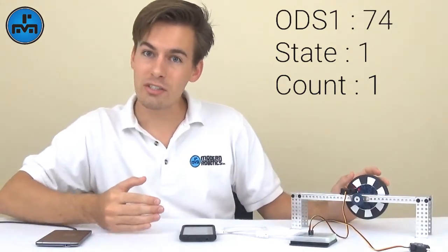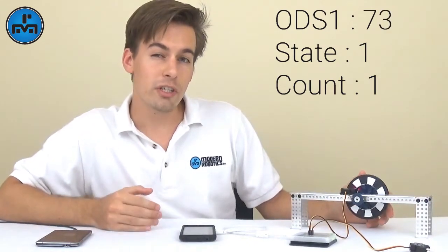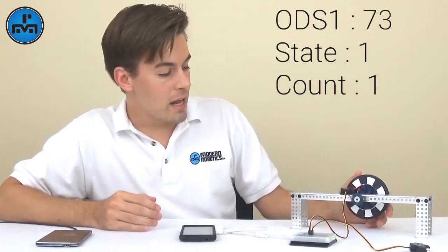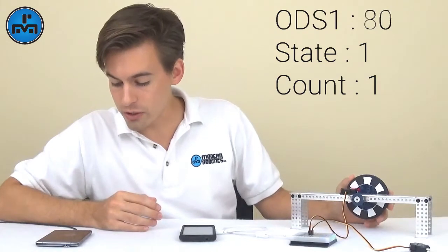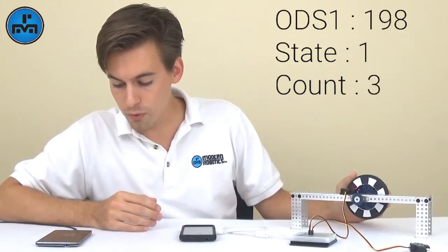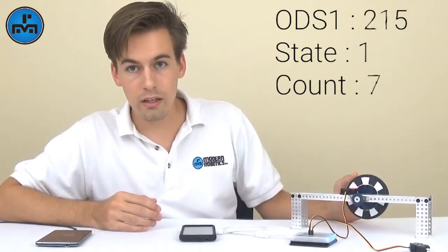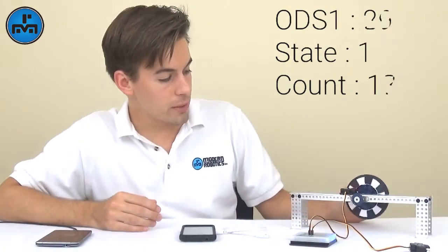Every time that state changes, only when it changes, so when the current state is different than the previous state, then we will increase count. So you can see that here we go two, three, four, five, and it'll keep going up if we keep going around.